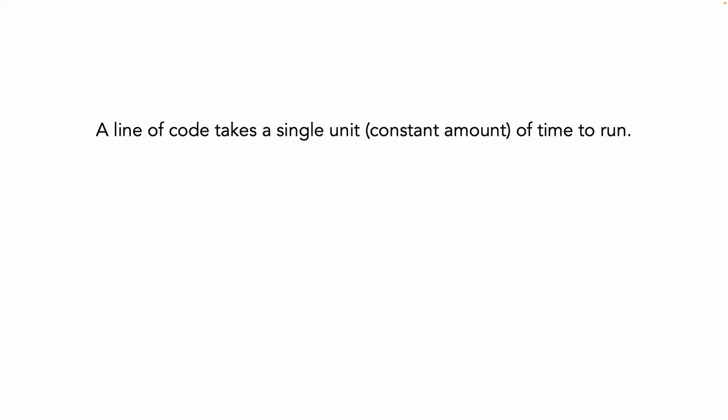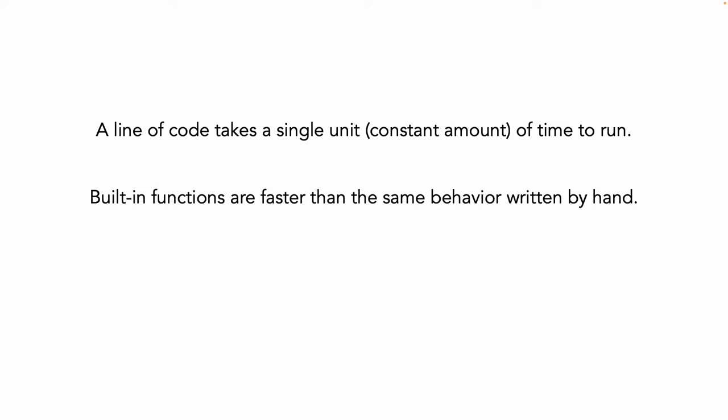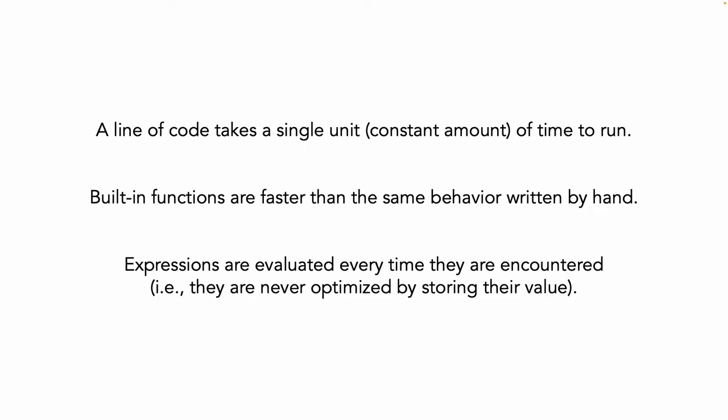Here are a few of their misconceptions. They have very naive models of how code relates to execution time. They don't understand the complexity that can lurk beneath built-in functions. They have little understanding of compiler optimizations, and so on. None of these should be surprising — these are, after all, CS1 students.